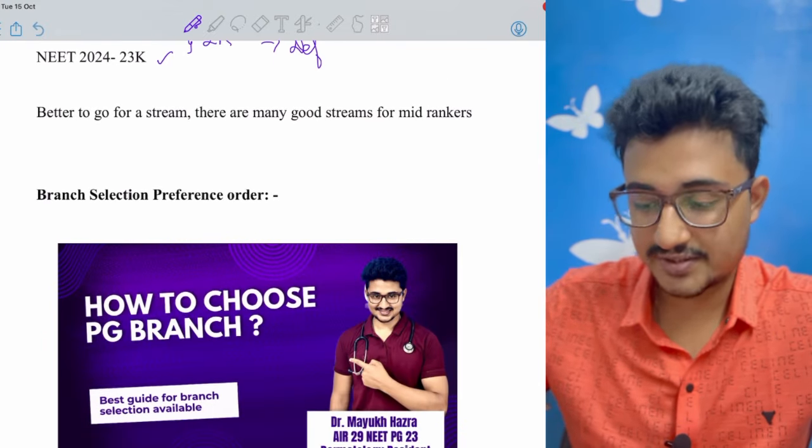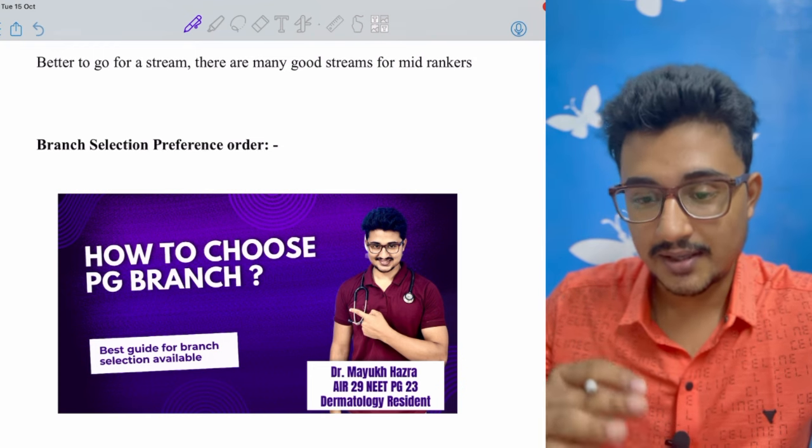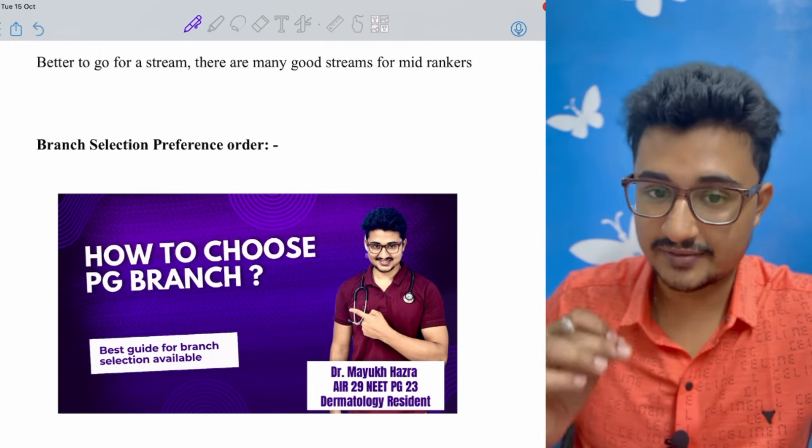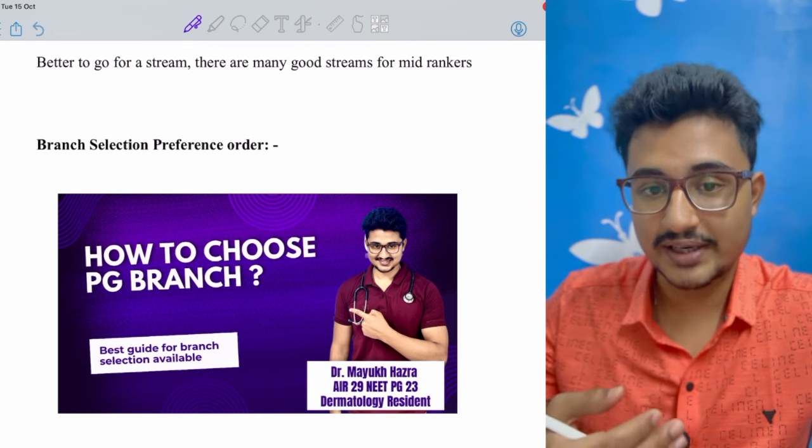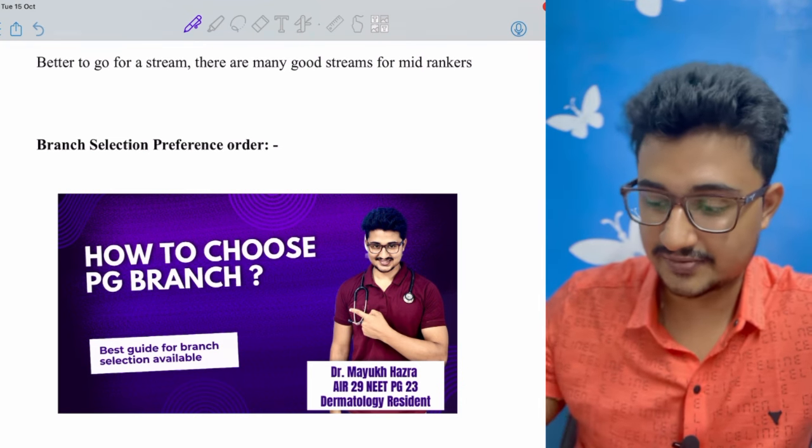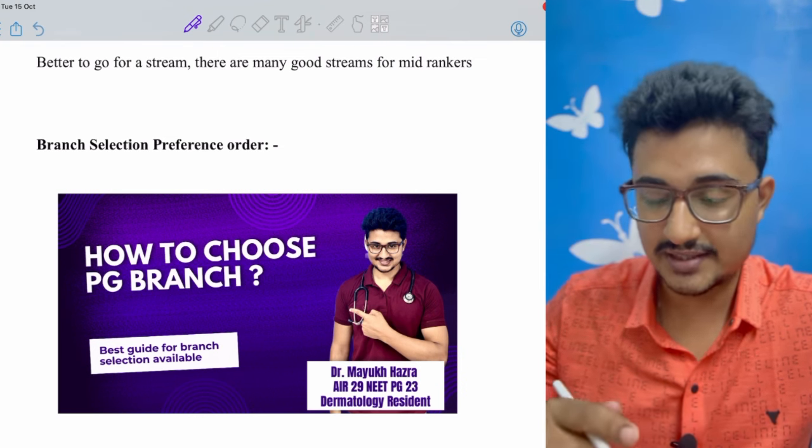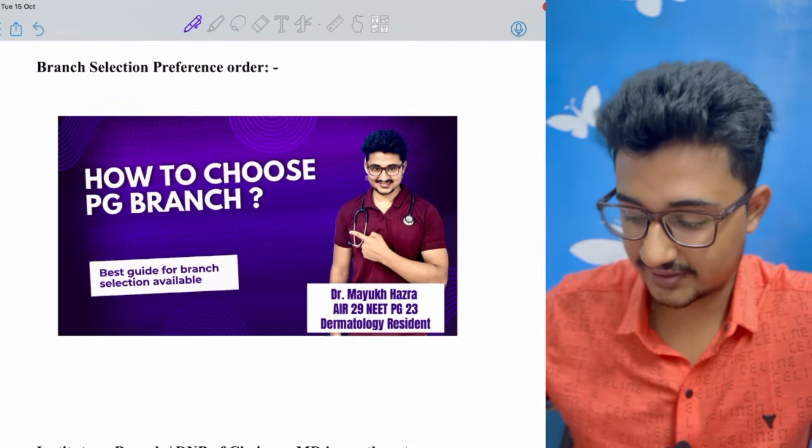Now branch selection: if you haven't selected your branch yet, then go watch this video. Even if you have selected what other branches you can keep in second or third preference, you can get idea from this video. In the end I would give the link of the video in the end screen. Go watch that video after this video ends.